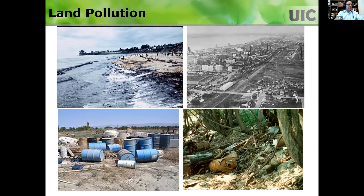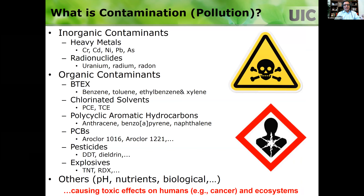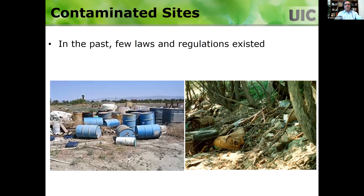In addition to managing waste, we should be looking at land pollution. We didn't have regulations, and even now, a lot of countries have regulations but no enforcement. As a result, wastes have been and continue to be dumped everywhere, leading to soil and groundwater contamination. The contaminants that leach out into soil and groundwater are very toxic — most are carcinogenic. We need to worry about health impacts on humans and adverse impacts on surrounding ecology.